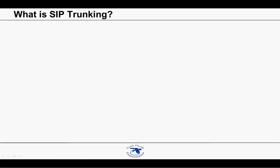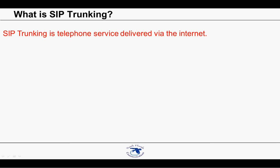For the sake of our discussion, SIP trunking is a telephone service delivered via the Internet. SIP trunks can be delivered by other means, but the Internet is the most common delivery method. SIP trunks are provided by an ITSP instead of the traditional phone company. ITSP stands for Internet Telephony Service Provider.